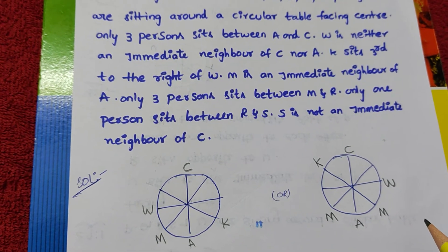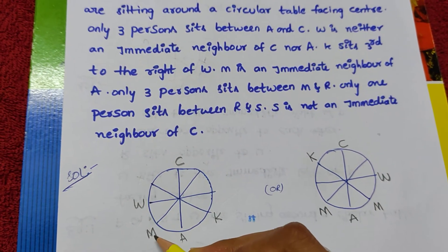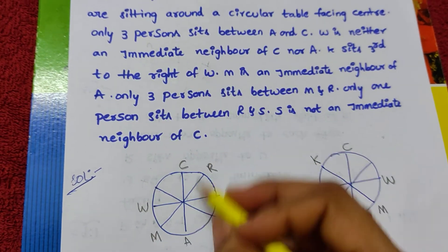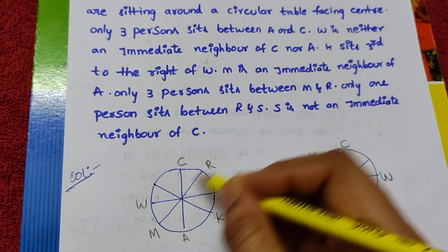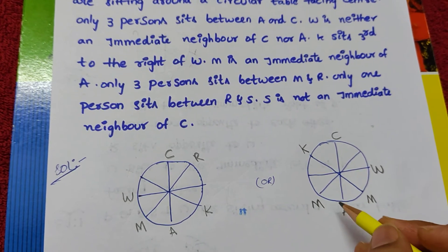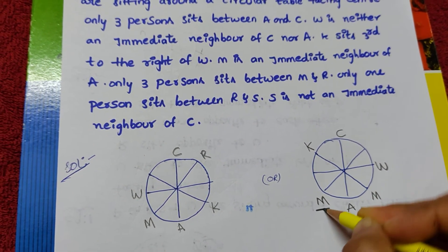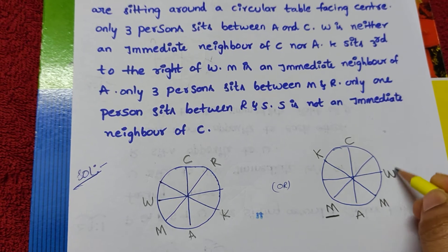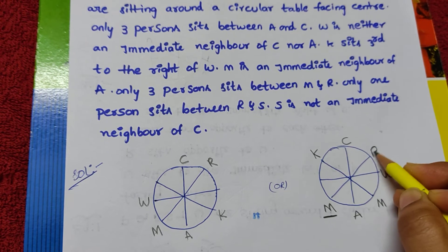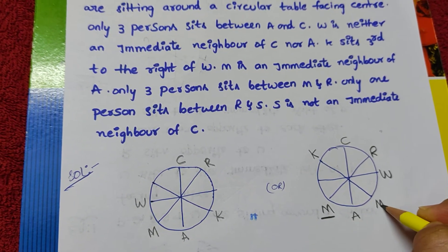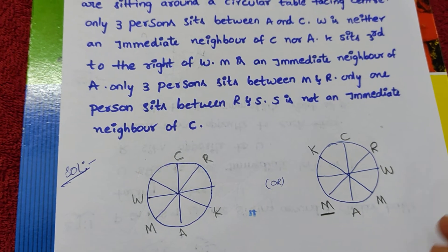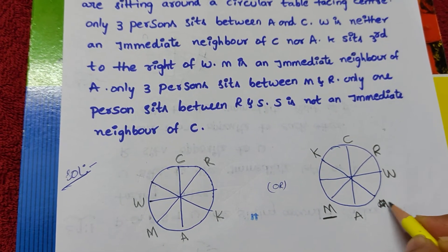Next: Only 3 persons sit between M and R. In the first diagram with M placed, counting 1, 2, 3 from M gives R here; counting from the other side also gives R here. In the second diagram, if M is here — counting 1, 2, 3 — we cannot place R there because K's position is already confirmed. So that assumption is wrong and is eliminated.